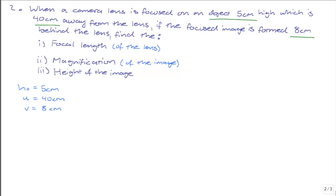Using the thin lens equation, or the lens equation as we know it, we know that 1 over F is equal to 1 over V plus 1 over U. F being the focal length, V being the image distance, and U being the object distance.